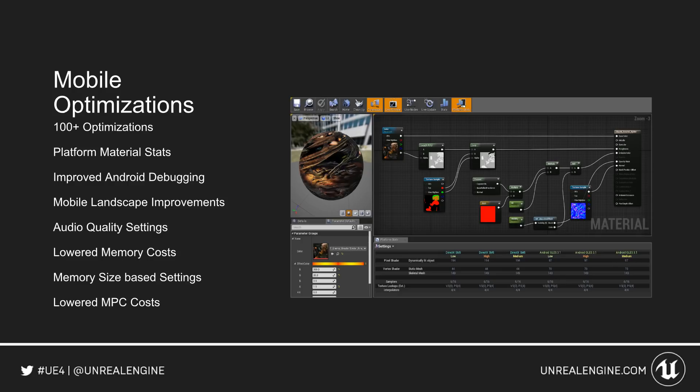We have many mobile optimizations — 100 or more. Included in that, we get things such as platform material stats, so you can see the stats for your shaders on different platforms easily, improved Android debugging, mobile landscape improvements, some audio quality settings, lowered memory costs, memory-size-based settings options, as well as lowered material parameter collection costs when you are changing them.